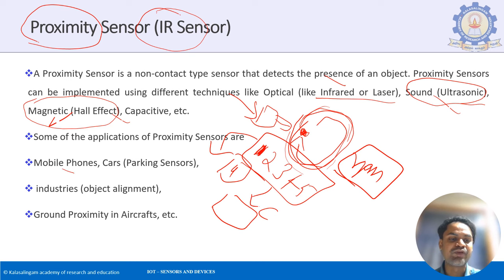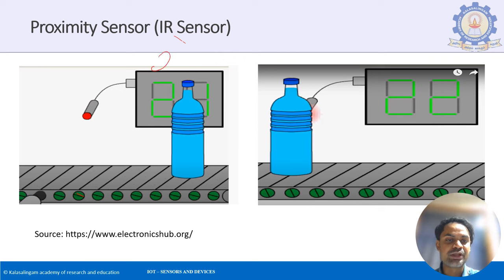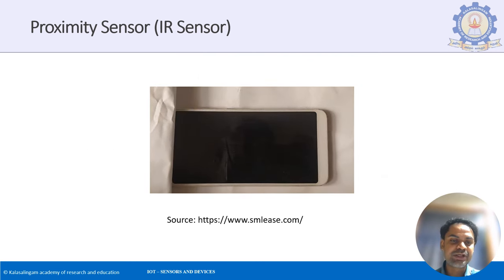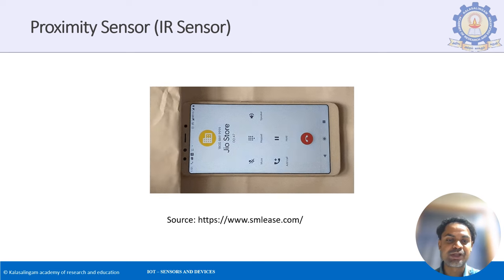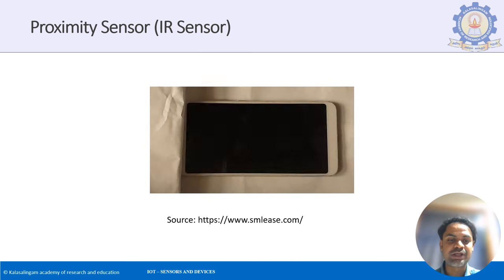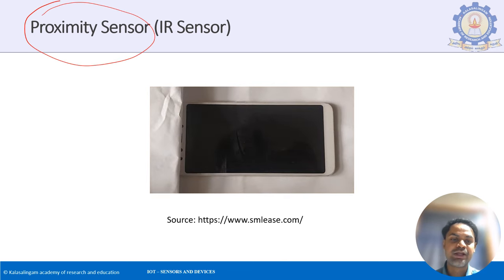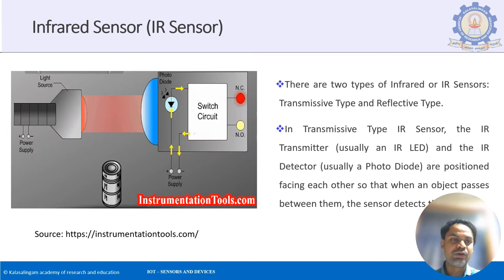On a conveyor belt, the proximity sensor increments the count each time an object passes — this is automation, removing the need for manual counting. Another example is mobile phone display: when a call is initiated and you put the phone to your ear, the proximity sensor detects your ear and turns off the display.